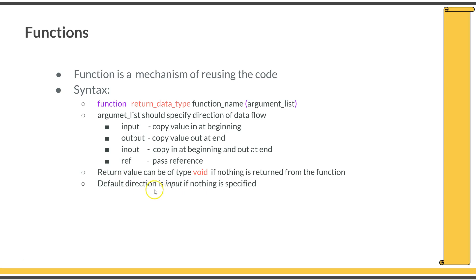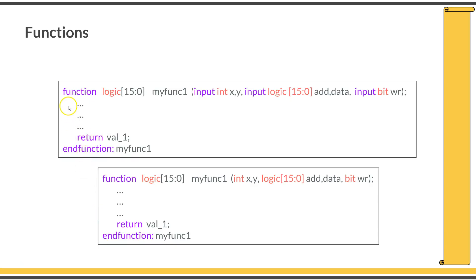Remember that if you do not specify an argument direction, the default direction is 'input' in the case of a function. For example, here a function is declared returning type 'logic [15:0]'. The return type is specified, followed by the function name 'my_function_one', and within the brackets the arguments are listed — 'input integer x, y', 'input logic [15:0] ADDR, data', and one more 'input bit' argument.